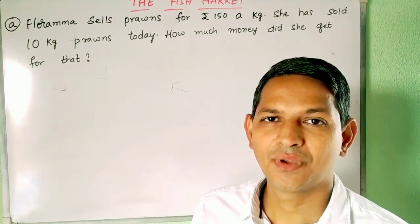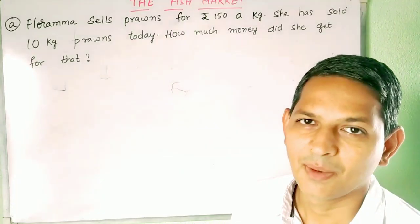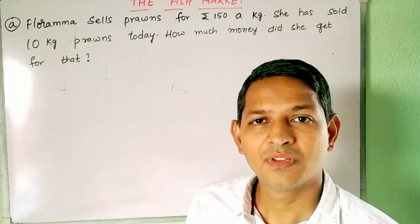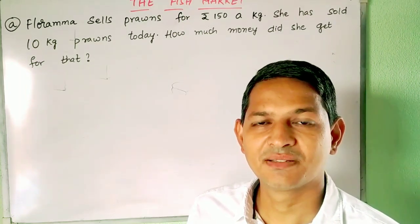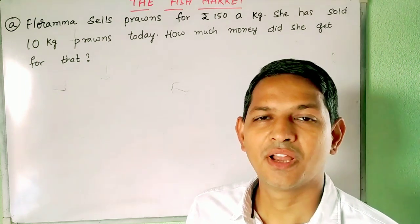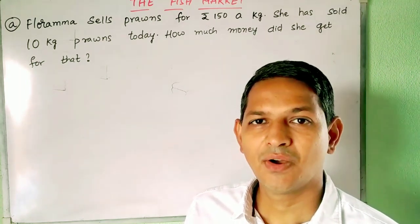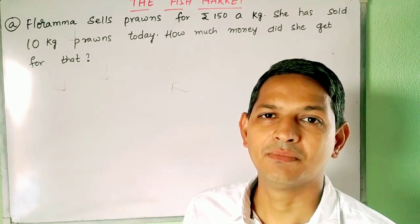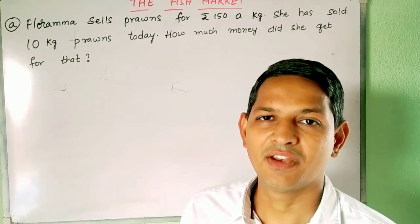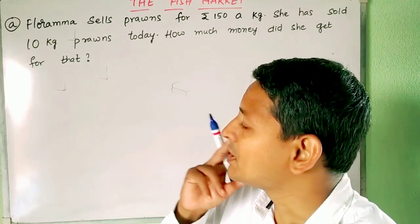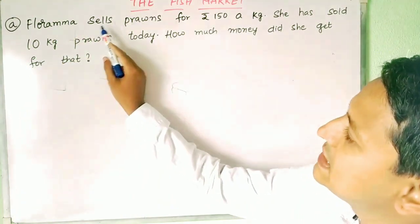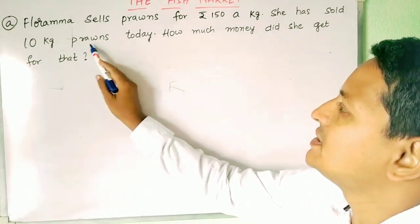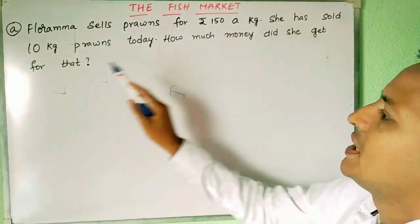Hi children. In this video we are trying to understand some problems related to the fish market. The fish market is considered a very noisy place because different sellers shout about what they are selling and the prices. It is also considered an idiom for a very noisy place. Now coming to the problem: Florama sells prawns for rupees 150 per kg. She has sold 10 kg of prawns today. How much money did she get for that?